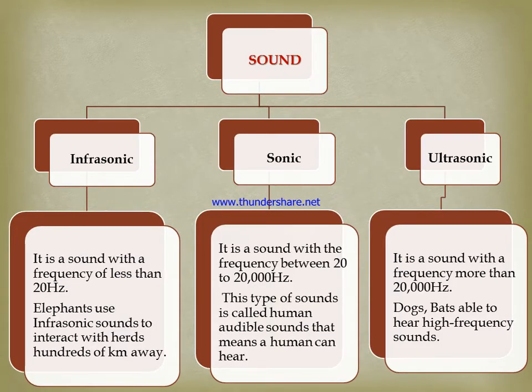Sound is mainly categorized into three categories. First, infrasonic; second, sonic; and ultrasonic. In case of infrasonic sound, it has a frequency of less than 20 hertz. For example, elephants use infrasonic sound to interact with herds thousands of kilometers away.